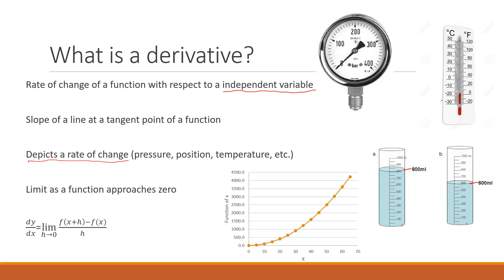Here we have a graphical representation. You have a function with the independent variable and the dependent variable. For the most part, this independent variable is time — we usually depict that as time, and then we have some other variable we're tracking with respect to time. It doesn't necessarily have to be time, but it's the one that typically comes up when we talk about derivatives in physics and most things along those lines — more times than not, it will be about time.